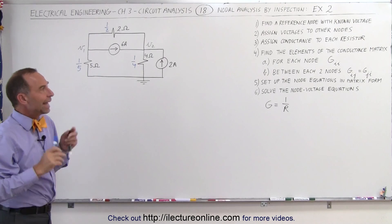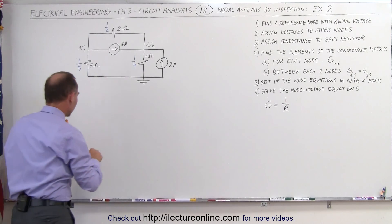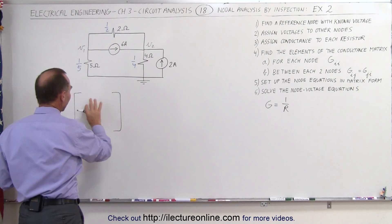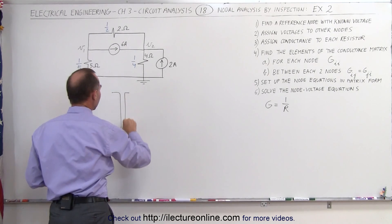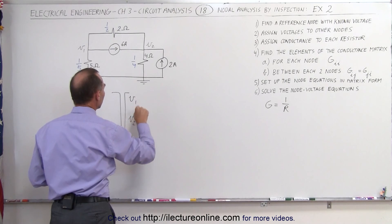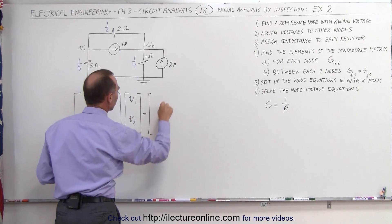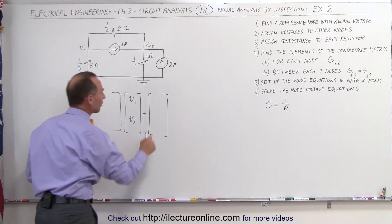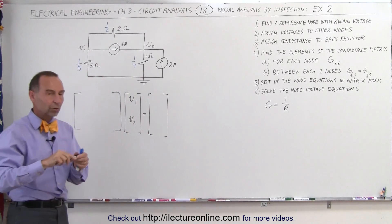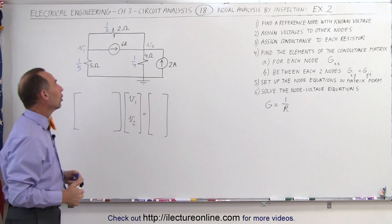The next step is to find the elements of the conductance matrix. We're going to end up with a conductance matrix, and when we multiply it times the two unknown voltages V1 and V2, that equals the current matrix. The elements in the current matrix are simply the sum of the currents entering and leaving each of the two nodes.